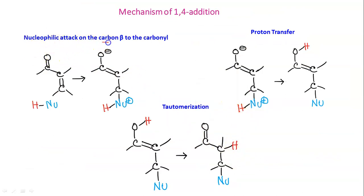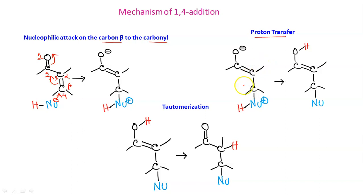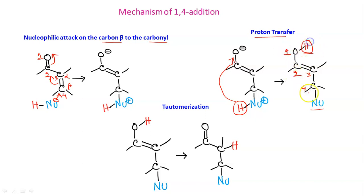In the mechanism of 1,4-addition: first, the nucleophile attacks the beta carbon (carbon 4). Numbering 1, 2, 3, 4 — the nucleophile attacks at carbon 4, the double bond shifts, and a negative charge forms on oxygen. Then there is proton transfer: the proton from the nucleophile shifts to this carbon. Now there is an OH and the nucleophile group present. Net addition of H and Nu is at positions 1 and 4 — that is why it is called 1,4-addition.